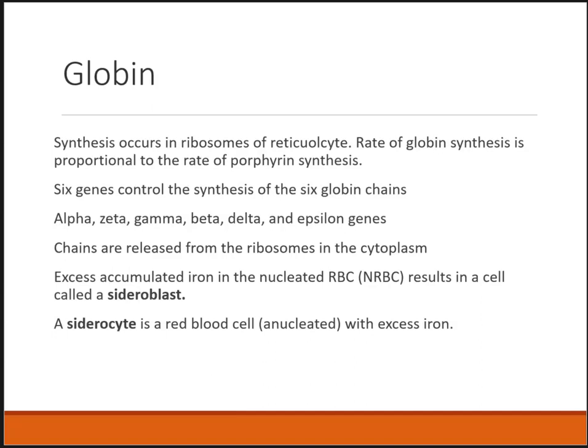A sideroblast is an important concept when we talk about certain anemias. It is a nucleated red blood cell with iron in it. Sometimes we can see mature red blood cells in the peripheral bloodstream with little chunks of iron in them — these are called Pappenheimer bodies, which we'll discuss when we do red cell morphology.